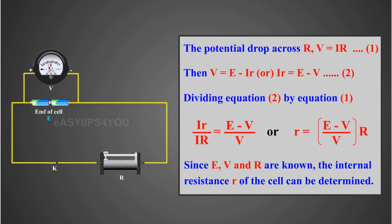Due to internal resistance r of the cell, the voltmeter reads a value V less than the EMF of the cell. Then, V equals E minus Ir, or Ir equals E minus V.